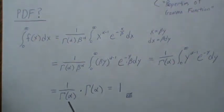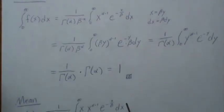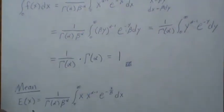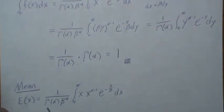So this is gamma of alpha divided by gamma of alpha, which is 1, so it is a PDF. Now let's look at the mean. The mean is the expected value of X, so we plug in an X times the density.